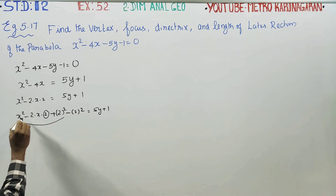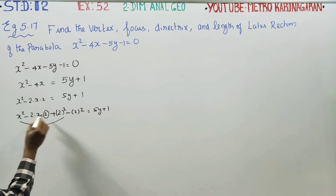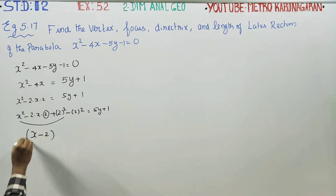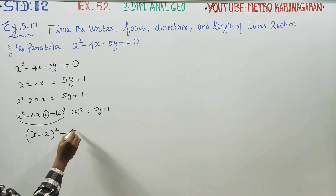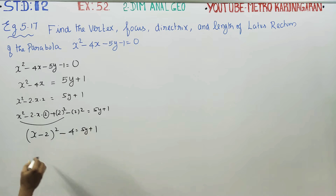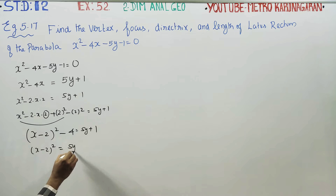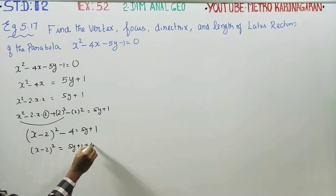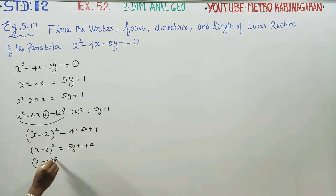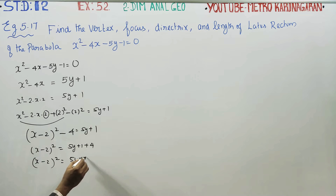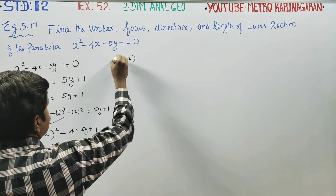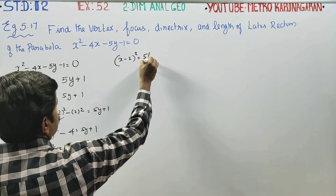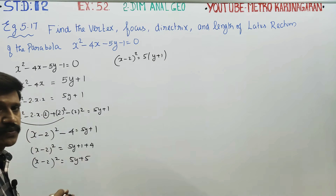Applying the completing the square formula: subtract (b/2)² = (-2)²/4. So x minus 2 whole square minus 4 equals 5y plus 1 plus 4. Therefore x minus 2 whole square equals 5y plus 5. Next, x minus 2 whole square equals 5 times (y plus 1).